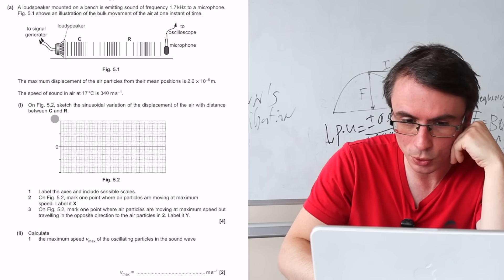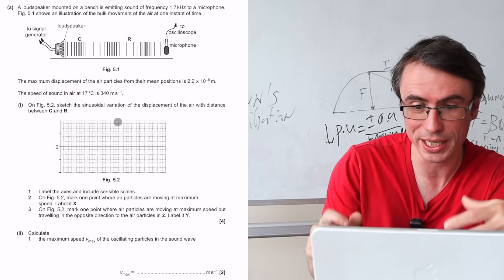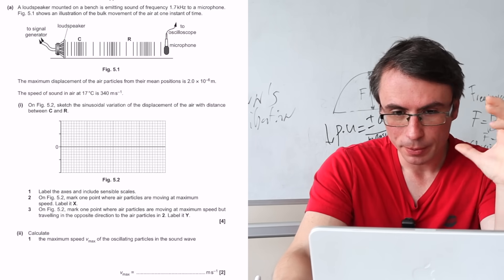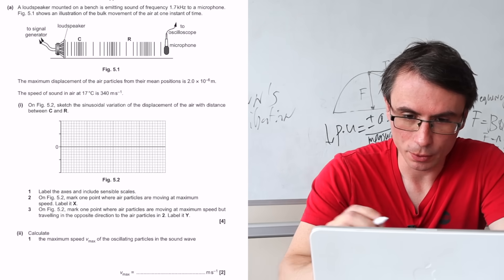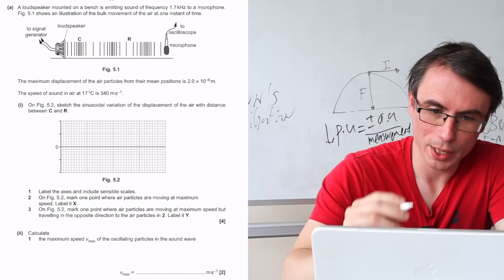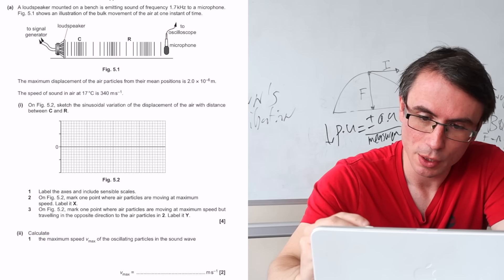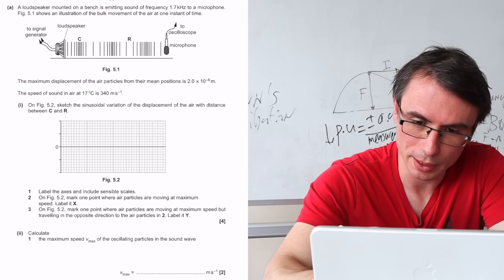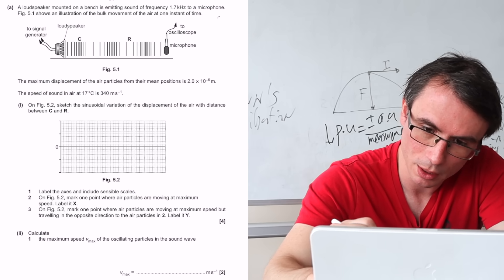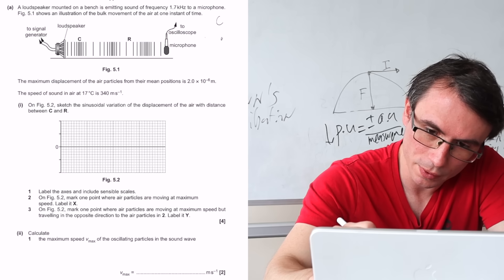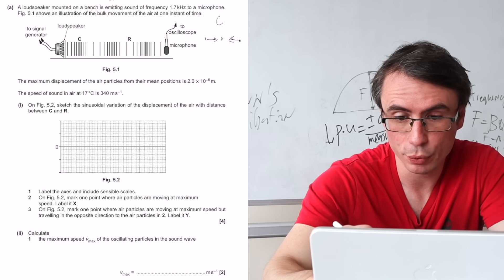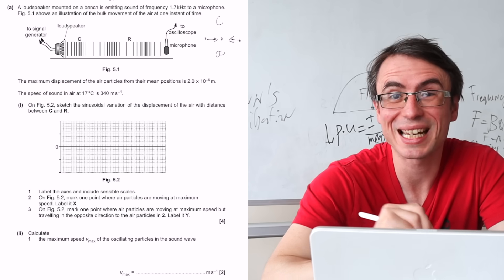On figure 5.2, sketch the sinusoidal variation of the displacement of the air with distance between C and R. The way we tackle these is as follows. I always tend to think of longitudinal waves in terms of two pictures. Whenever we have a compression, all of the particles are moving towards that point. That point itself — the compression — has a displacement of zero.